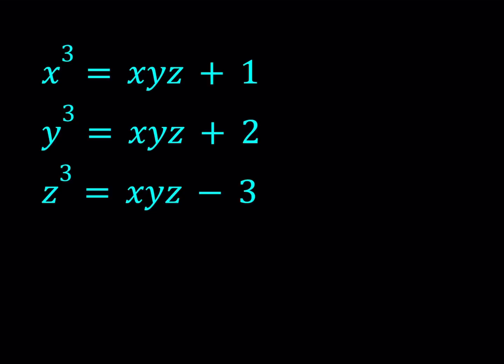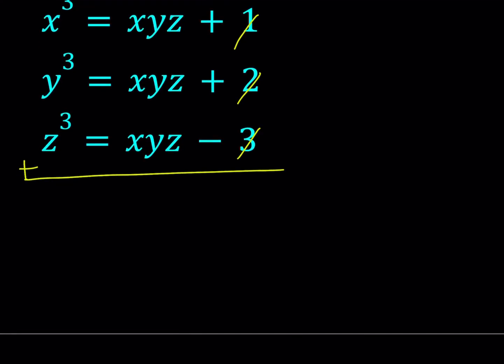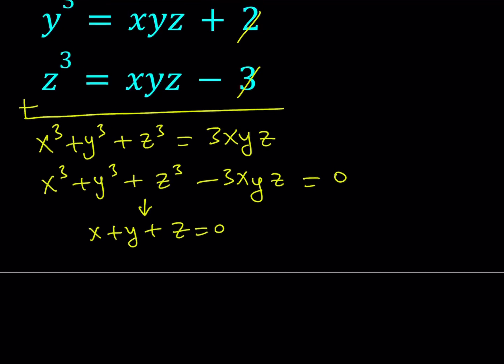One thing you might think about is adding these equations. Why? Because if you add them, you get rid of the constant terms - this becomes 0. So we get x cubed plus y cubed plus z cubed equals 3xyz. This is a special polynomial because if you subtract 3xyz, you get a factorable polynomial. x plus y plus z divides this, so x plus y plus z equals 0. But is that going to help with the system?